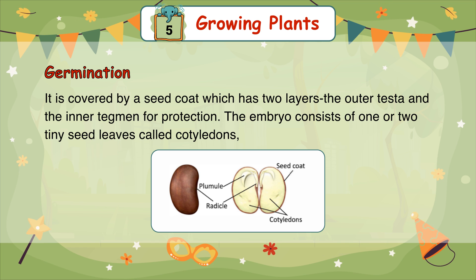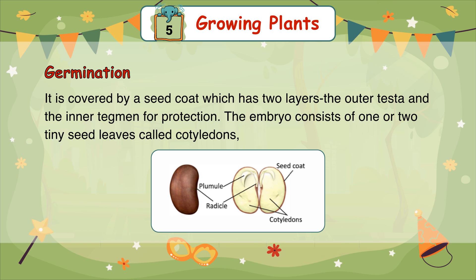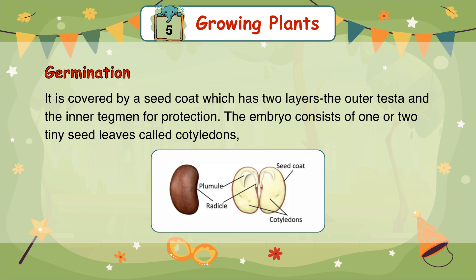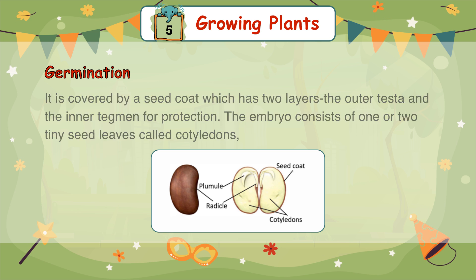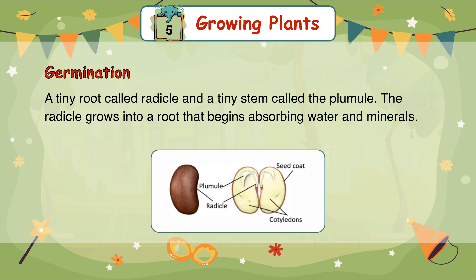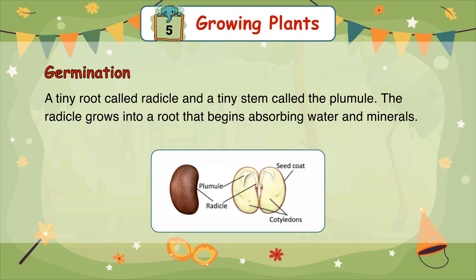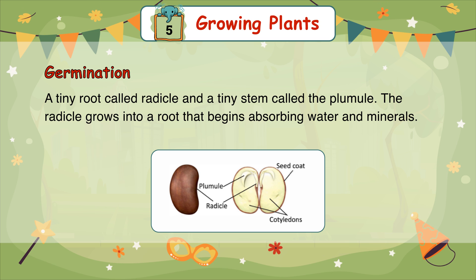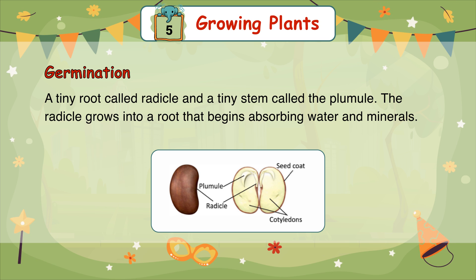The embryo consists of one or two tiny seed leaves called cotyledons, a tiny root called the radicle, and a tiny stem called the plumule. The radicle grows into a root that begins absorbing water and minerals.